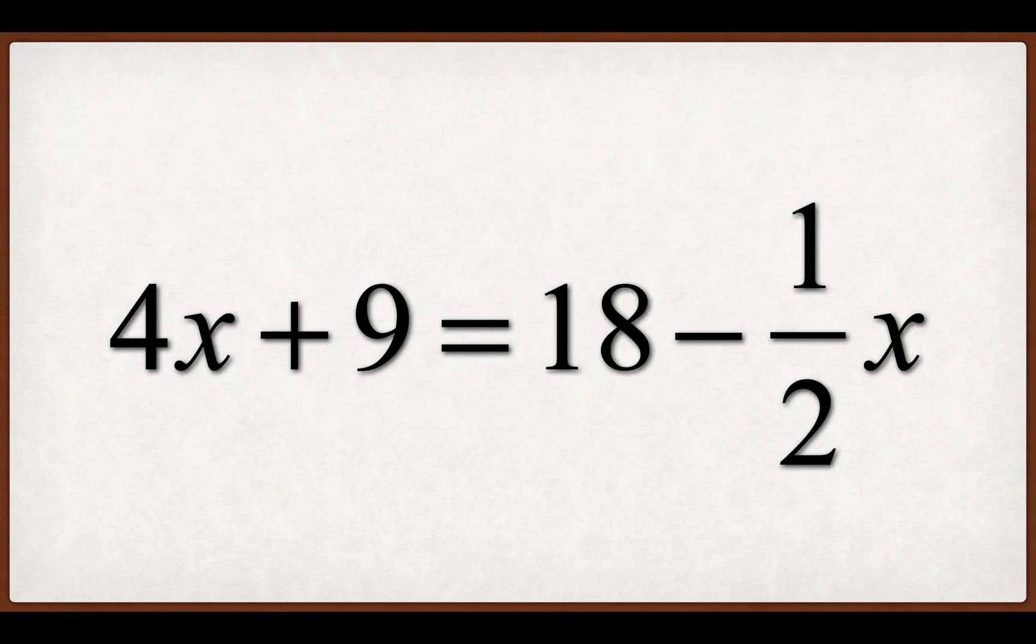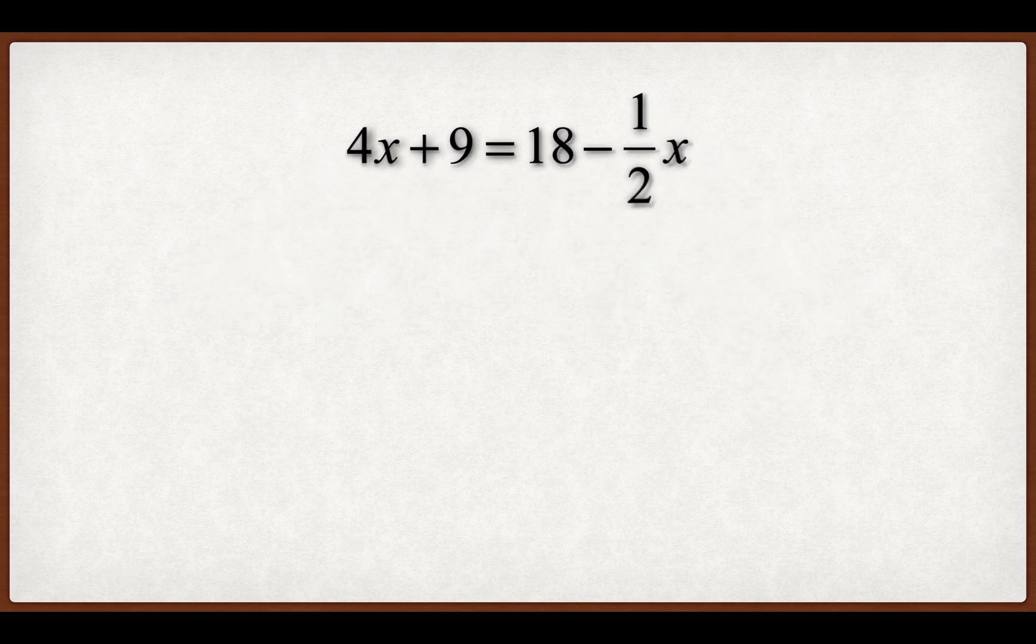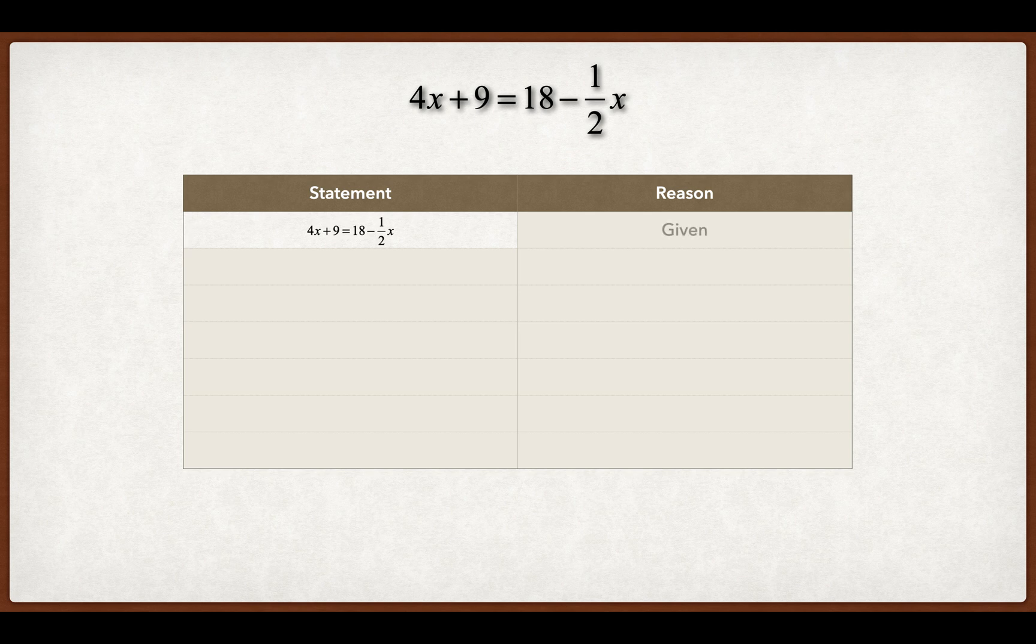So now let's go back to this problem. And what we're going to do is we're going to talk about how to write it as a proof. So the first thing that we always have to write is we have to write our statement. Our first statement is always going to be the thing that we are given, the problem that we have at the start. And we will say given because that's what it told us.